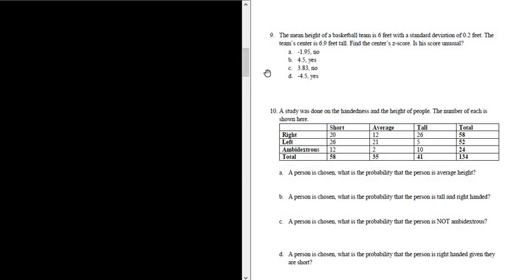Number 9, the mean height of a basketball team is 6 feet with a standard deviation of 0.2 feet. The team's center is 6.9 feet tall. Find the center's z-score. Is his score unusual?